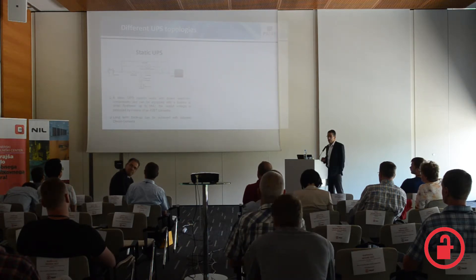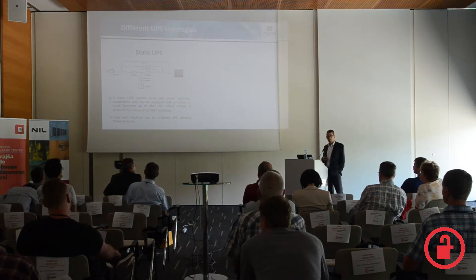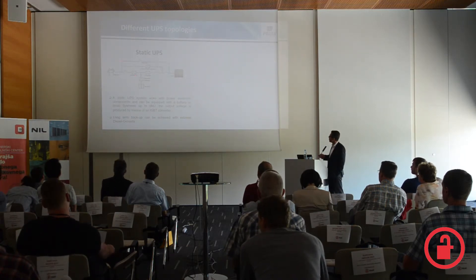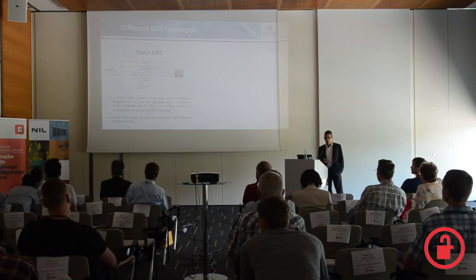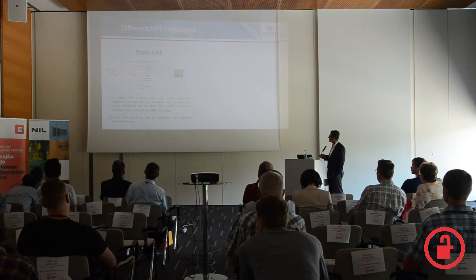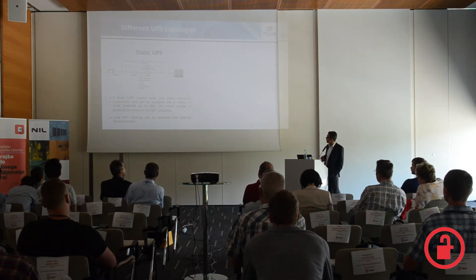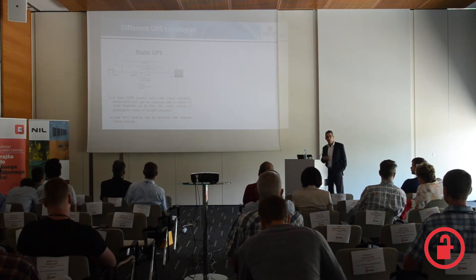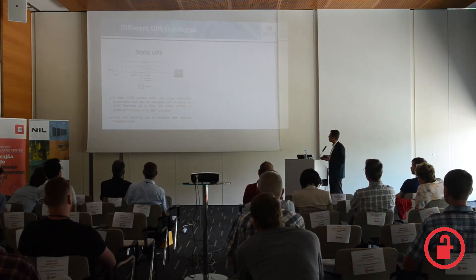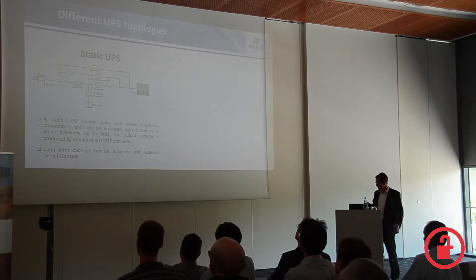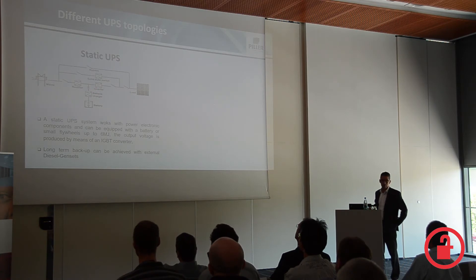First of all, we see an overview of the concept of a static UPS, which has main components of a rectifier, an inverter, and somewhere in the middle a battery connected. The normal way of operation is that the main AC is rectified to DC, where the battery works, and then AC is created again. This technology uses purely electronic components — control electronics and power electronics. Nowadays we find so-called IGBTs, very fast switching power transistors, inside to create the output voltage.